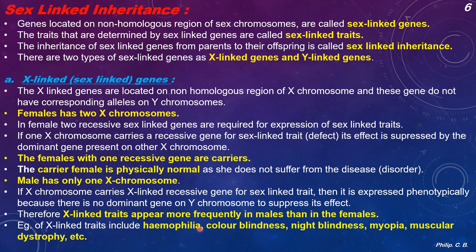Therefore, X-linked traits appear more frequently in males than in females. This particular trait is seen in 100% of affected males, whereas in females it is very rare because one X chromosome is always the dominant one. Examples of X-linked traits include hemophilia, color blindness, night blindness, myopia, and muscular dystrophy.